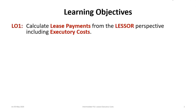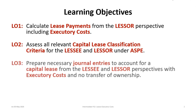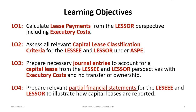There are four basic learning objectives for this tutorial. The first will be to calculate the lease payments from the lessor perspective, this time including executory costs. Then we will assess all the relevant lease classification criteria for both the lessee and the lessor under ASPE. Then we will prepare the necessary journal entries to account for a capital lease from both lessee and lessor perspectives with executory costs and no transfer of ownership. Finally, we'll prepare the relevant partial financial statements for the lessee and lessor to illustrate how capital leases are reported.